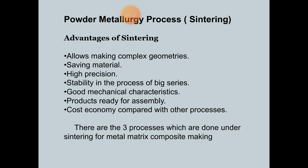Compared to other processes, sintering is economical. There are three processes done under the sintering of metal matrix composite making: first is hot pressing fabrication, second is hot isostatic pressing (HIP) fabrication, and third is hot powder extrusion fabrication of metal matrix composites.